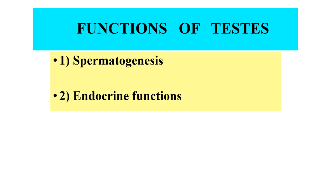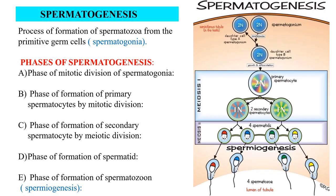The two principal functions of the testis are spermatogenesis and endocrine functions. Spermatogenesis refers to the process of formation of spermatozoa from the primitive germ cells, i.e., spermatogonia. The phases are as follows. First, phase of mitotic division of spermatogonia: each spermatogonium divides mitotically 5 times to form 32 spermatogonia; this division occurs in the basal compartment of the seminiferous tubule. Next, phase of formation of primary spermatocytes by mitotic division: the 32 spermatogonia undergo mitosis to form 64 primary spermatocytes.